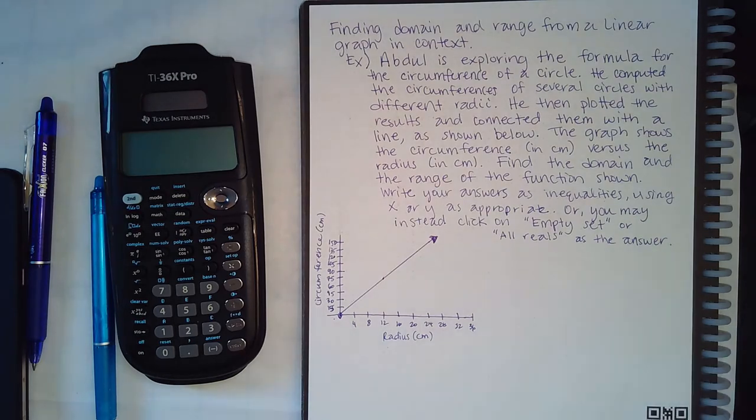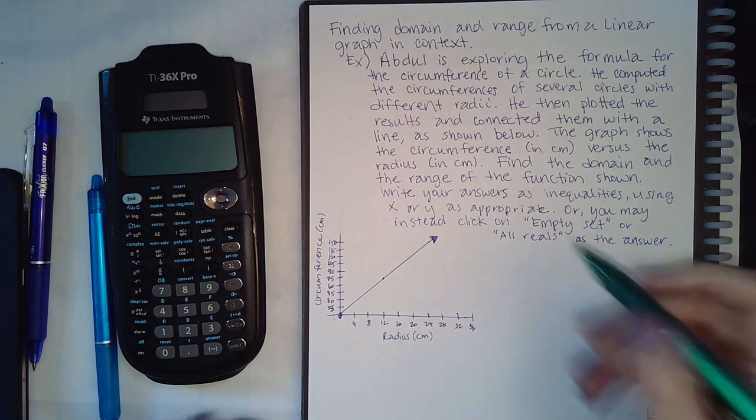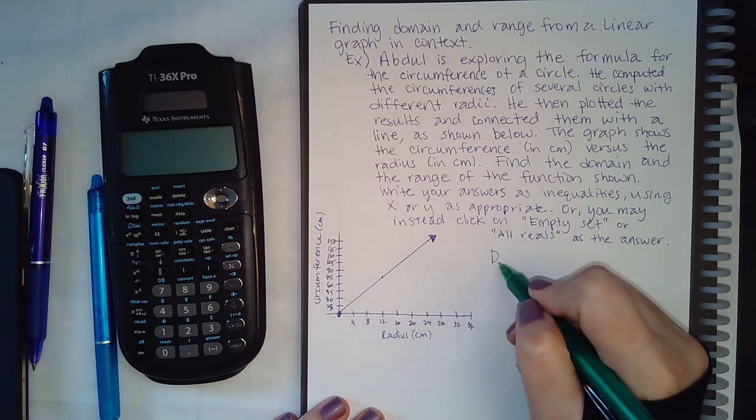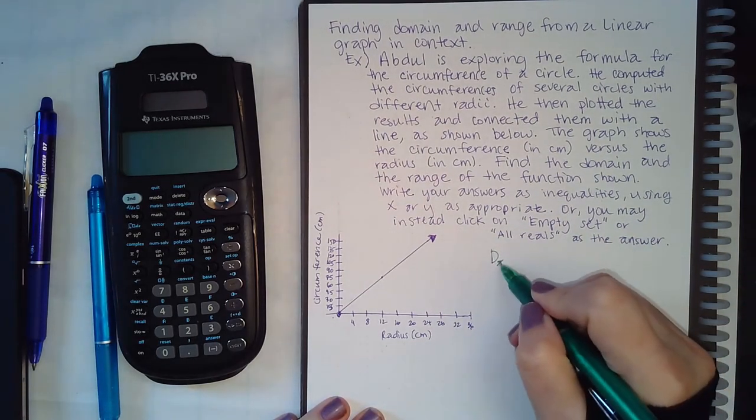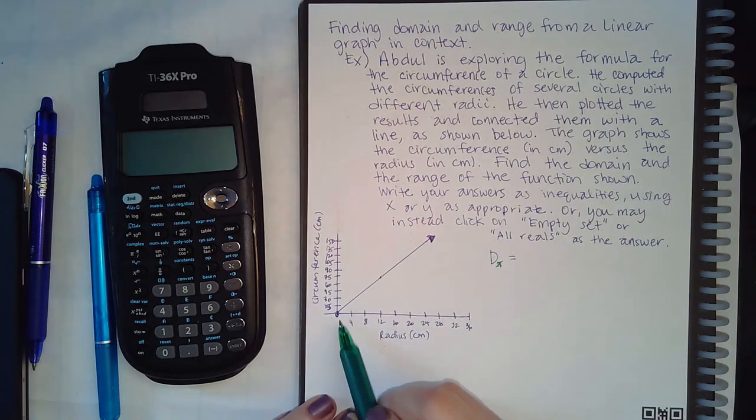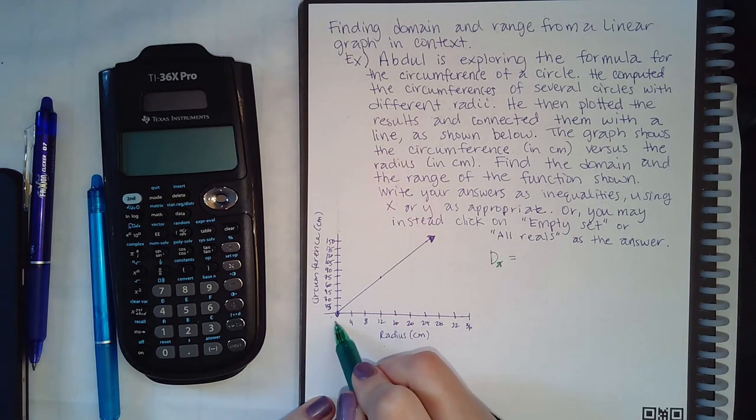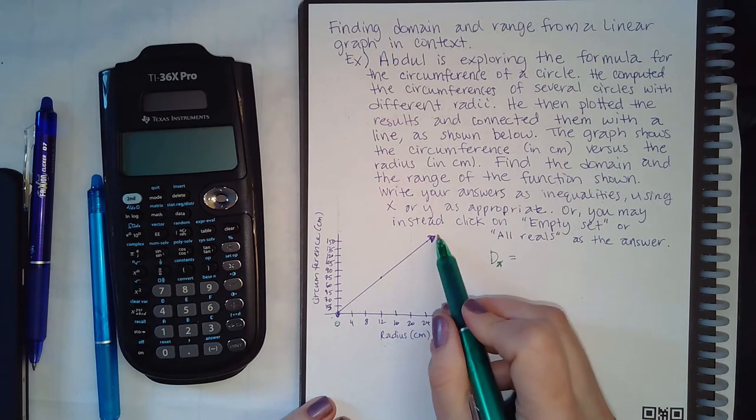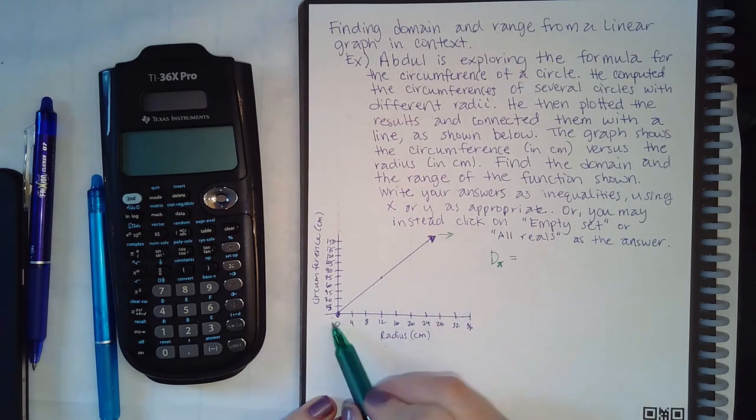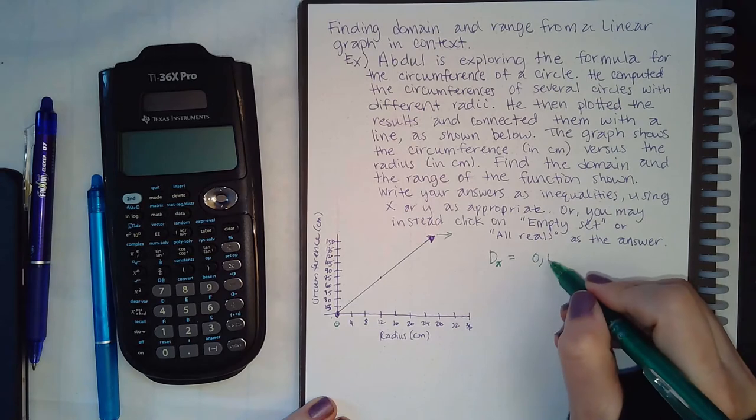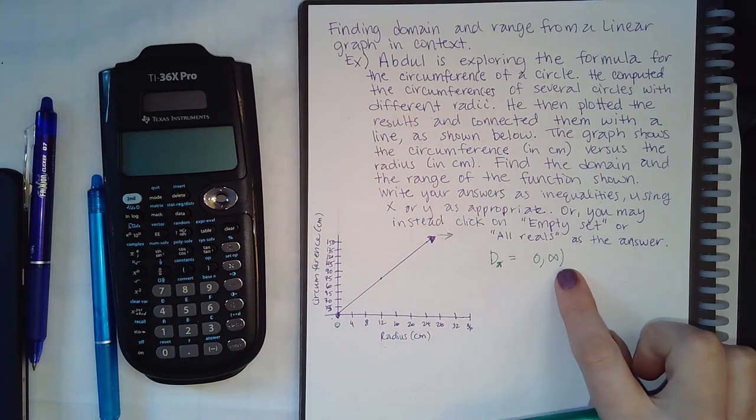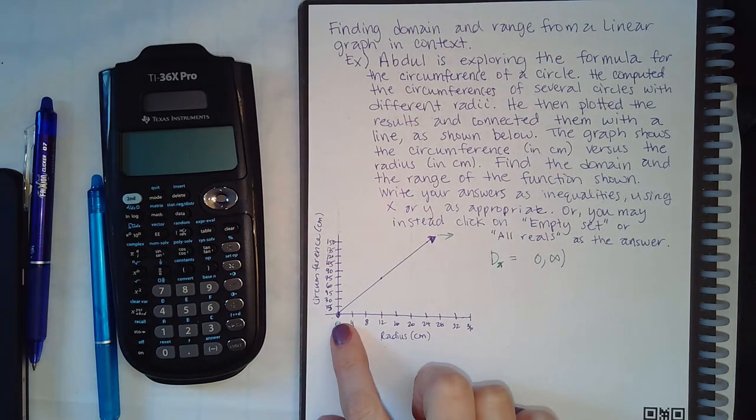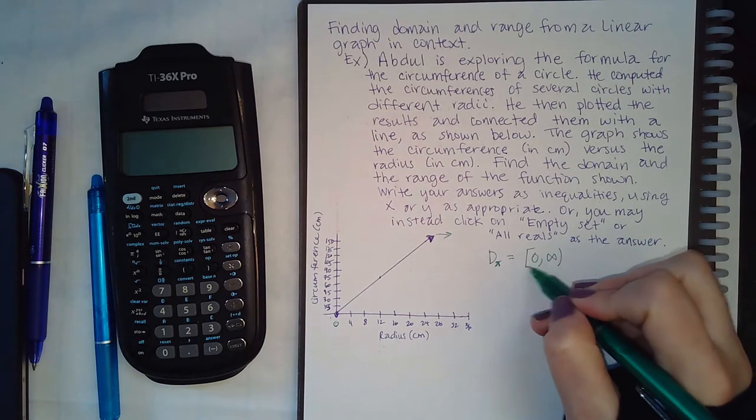Okay, so remember two things: domain is the x values, right? Those are the x values. So we have to say where x values start, here at what looks like zero, and because of that arrow going forever to the right it's gonna go from zero to infinity. We know infinity always gets the parentheses, that's a solid dot which means it should have a bracket.